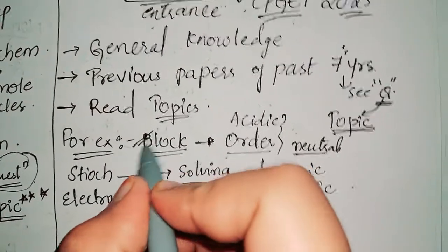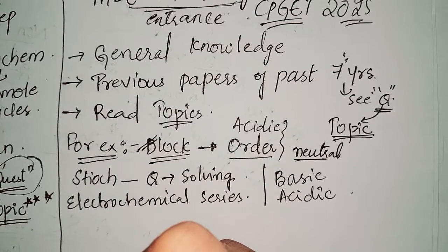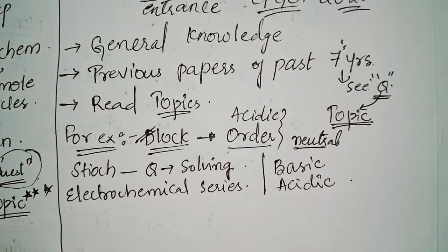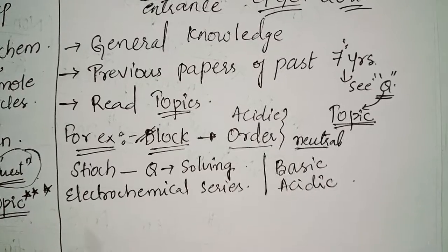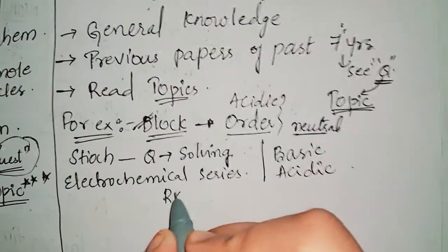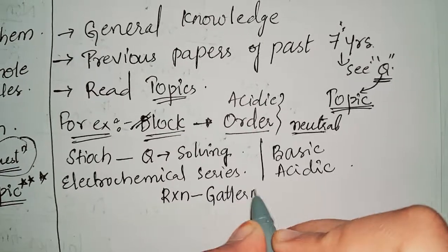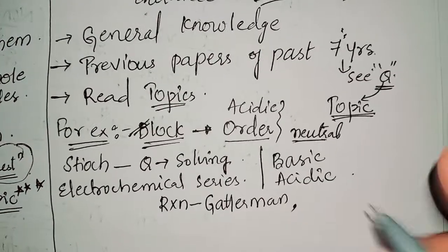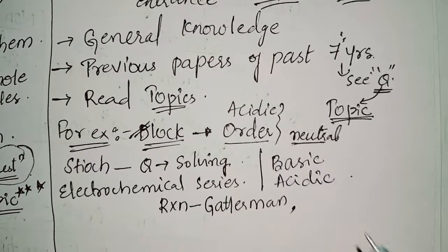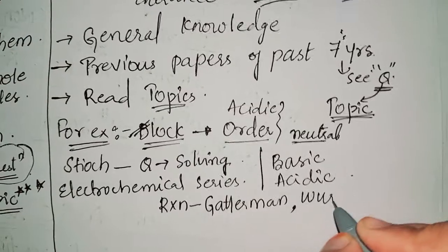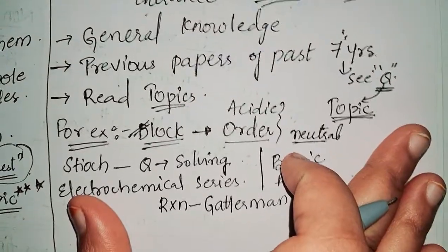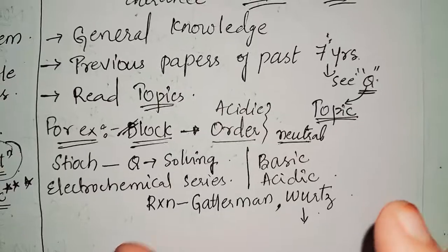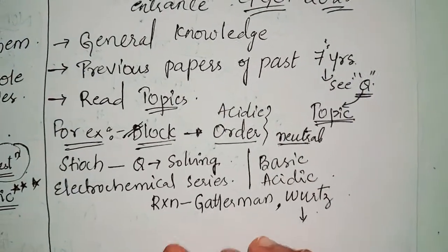Blocks are important and electrochemical chapter is also important. Stoichiometry and general reactions you need to be prepared with, like Gutterman reaction and famous reactions, you know that many reactions are there, so Wurtz reaction, these reactions you need to be prepared, okay? Directly, they will give you the reaction and you need to select the perfect reaction for this, okay? So be prepared with all these topics.